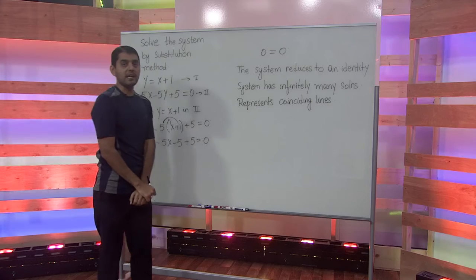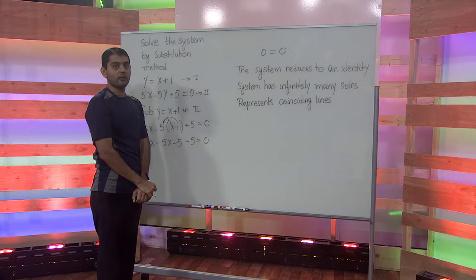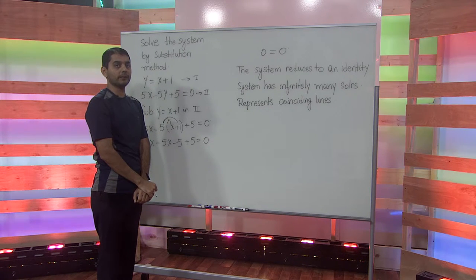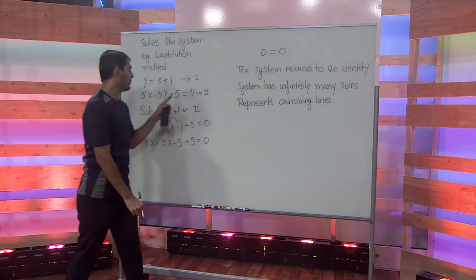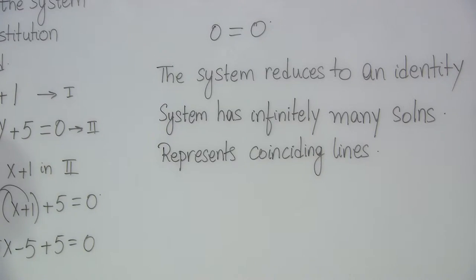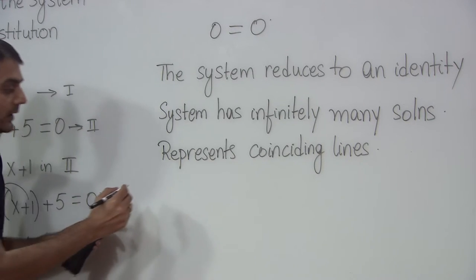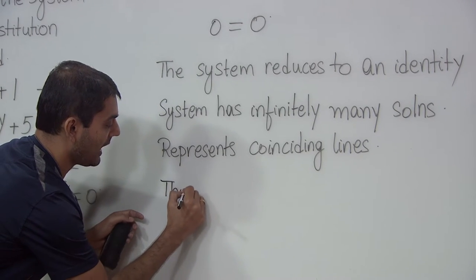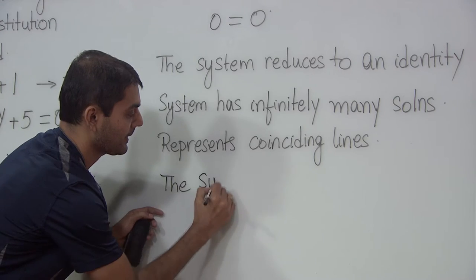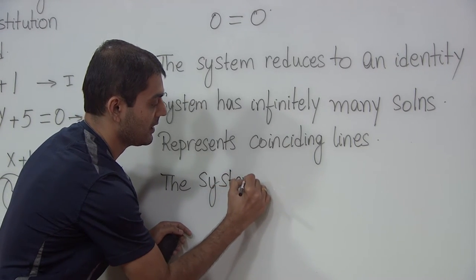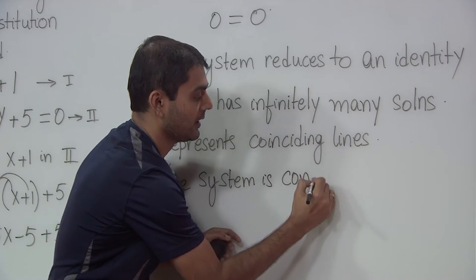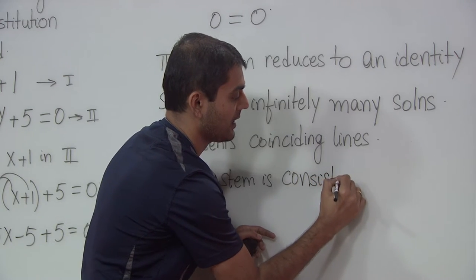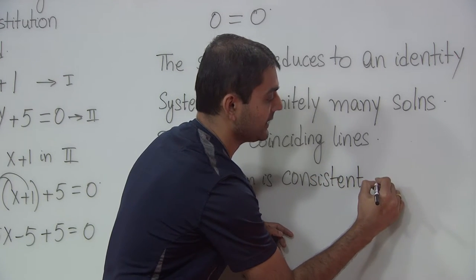Each point on the line represents a solution. Since there are infinitely many points on the line, there are infinitely many solutions for this system of linear equations. This system is referred to as a consistent and dependent system.